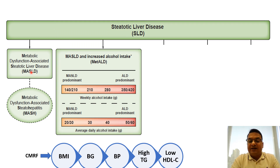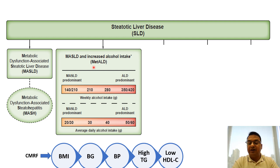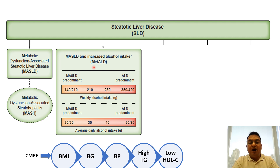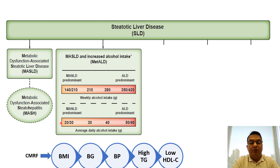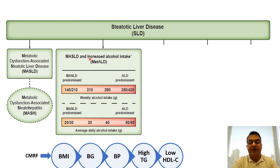The next category under SLD is MASLD with increased alcohol intake, called MET-ALD. These are patients who have steatotic liver disease plus at least one of the five cardiometabolic risk factors, plus excessive alcohol intake ranging between 20–50g daily for females and 30–60g per day for males. That is the new category created by this consensus document: MET-ALD.